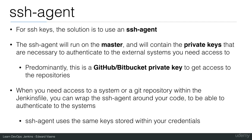The SSH agent uses the same keys stored within your credentials, so you've probably already stored the SSH key there. The SSH agent can use those keys, and when you call SSH agent within your Jenkins file you can use it to connect to a system or execute git commands. To make it really clear, I will show that in the next demo.